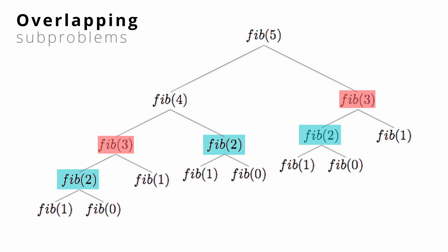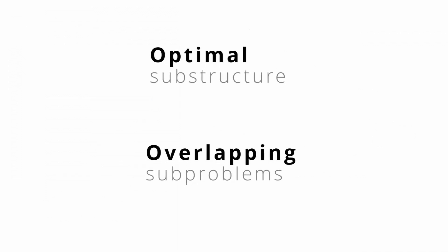If a problem has these two characteristics, it can by the very definition of those characteristics be solved using recursion. This is why when trying to identify if a problem is a dynamic programming problem, whether or not the problem can be solved using a recursive solution is a good hint. But this doesn't mean that all problems with recursive solutions can be optimized with dynamic programming — which is why you must understand the two attributes we just discussed: optimal substructure and overlapping subproblems.